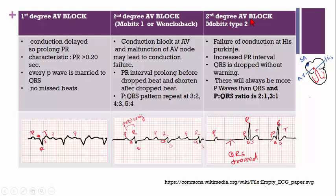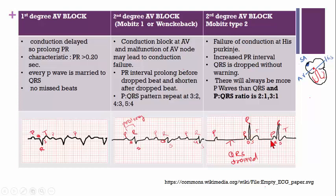The second degree AV block Mobitz Type 2 occurs due to failure of conduction at the His bundle and Purkinje fibers. Here we can see an increased PR interval and the QRS complex is dropped without warning. There will always be more P waves than QRS complexes, with a P-to-QRS ratio of 2:1 or 3:1. We can notice: P then dropped QRS, then P-QRS, then P-QRS.